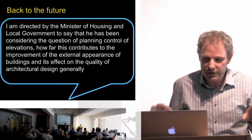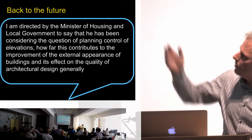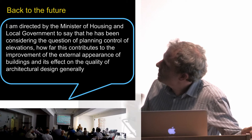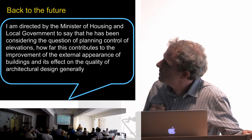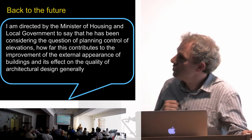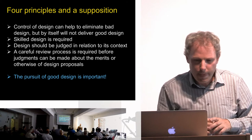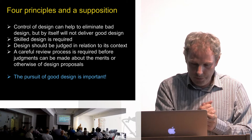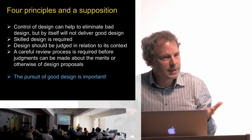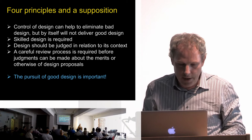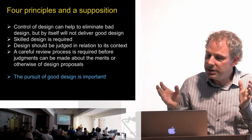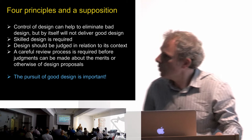Penned by J. Hope Wallace, the Under-Secretary of State at the Ministry of Housing and local government back then. He says: 'I am directed by the Minister of Housing and local government to say that he has been considering the question of planning control of elevations — how far this contributes to the improvement of the external appearance of buildings and its effect on the quality of architectural design generally.' Updating the sentiments that follow that introduction, and taking on board the broader notion of urban design that we have today, as opposed to aesthetic design which was very much the focus back then, what you see in that note from 1966 is four key principles, from which a supposition is drawn.